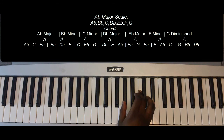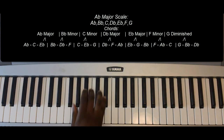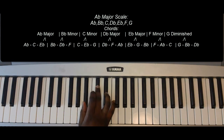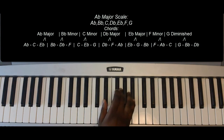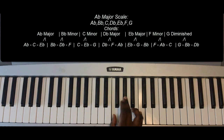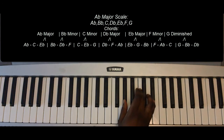So going up the scale, or going up the chord structure: A-flat, B-flat minor, C minor, D-flat, E-flat, F minor, G diminished, and A-flat major.